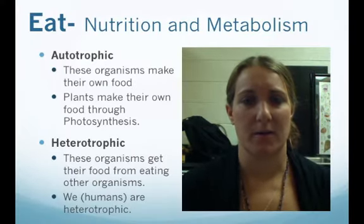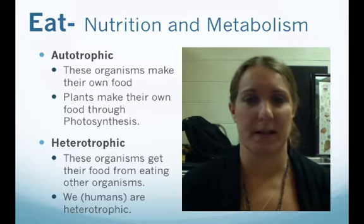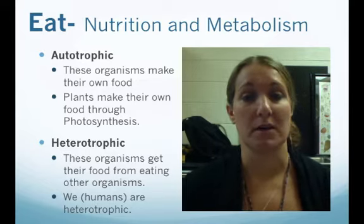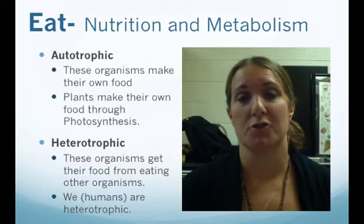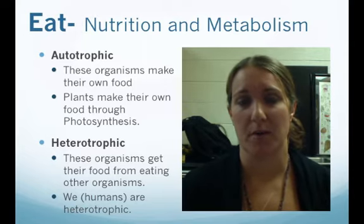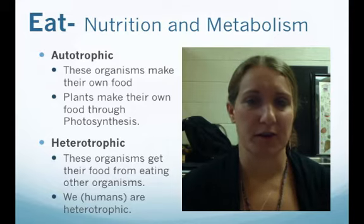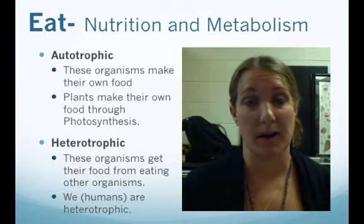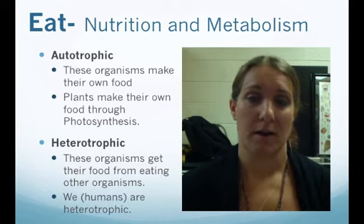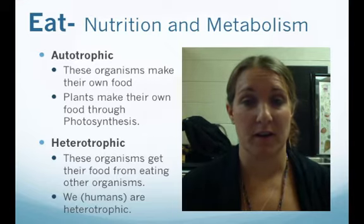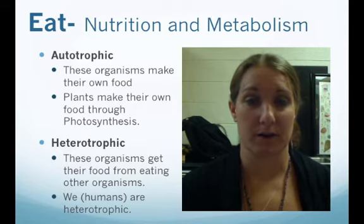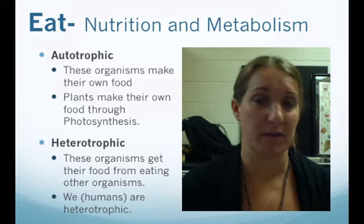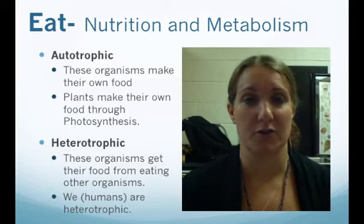The next characteristic we're going to talk about is eating. All organisms have to get nutrition through either making their own food or consuming food from other organisms. If you're autotrophic, those are the organisms that make their own food, like plants — they use sunlight and carbon dioxide to make their own food. Whereas if you're heterotrophic, that means you get your food from eating other organisms. We eat plants, we eat animals, therefore we are heterotrophic. Anything that makes its own food is autotrophic; anything that has to eat something else is heterotrophic.